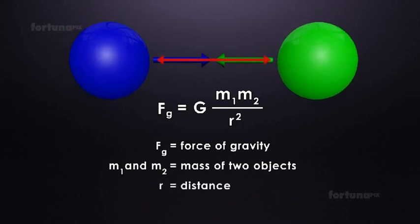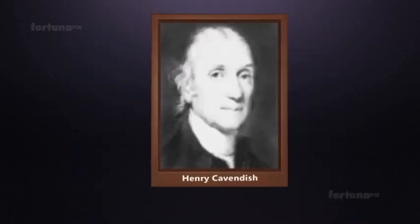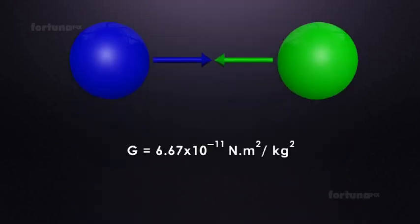R is the distance between the center of the two masses and G is the gravitational constant. The value of G was determined by scientist Henry Cavendish as G equals 6.67 times 10 to the power minus 11 meters squared per kilogram squared.